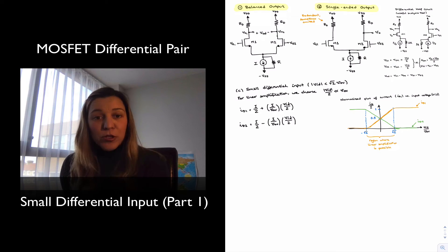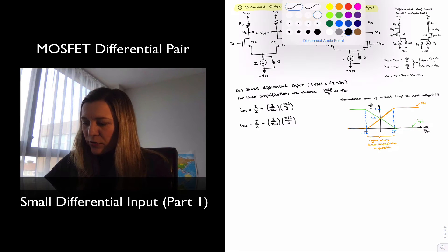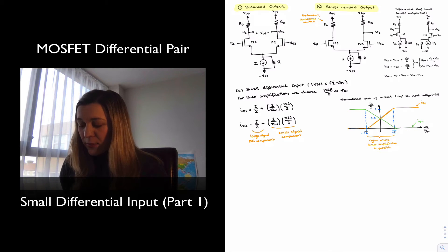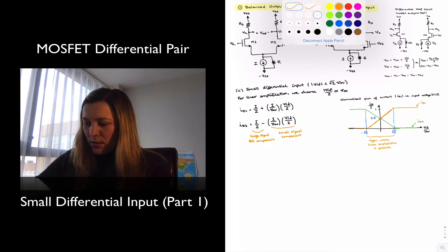We can see that each one of those expressions for ID has two components. I halves, which is the large signal component, the quiescent component. In the quiescent point where no differential signal is applied, there's only a common mode signal. We get I halves through each branch. That is the quiescent current plus the differential component. So I'm going to call this the large signal DC component of I. And this will be the small signal component, which is dependent on the ID.